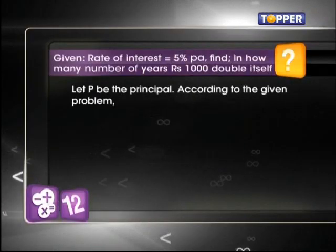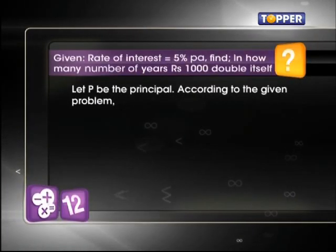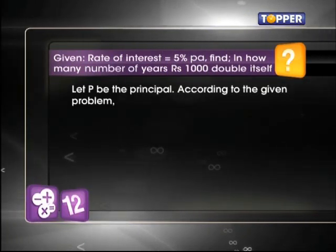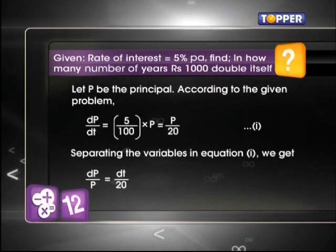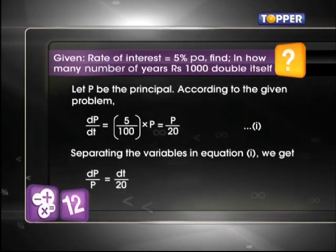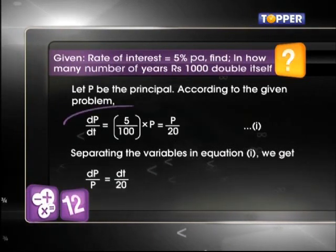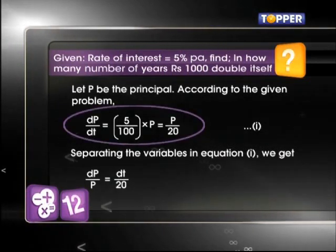So let p be the principal and let it be doubled in t years. The rate of increase of principal is dp/dt = 5% of p implies that dp/dt = p/20.